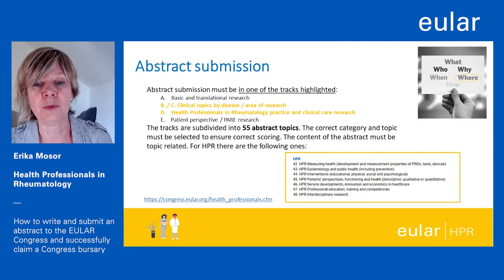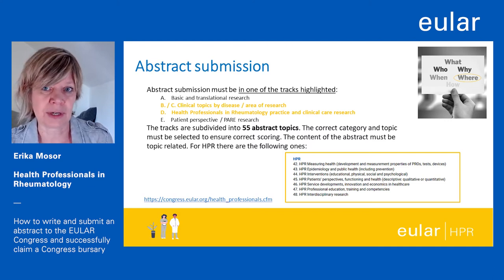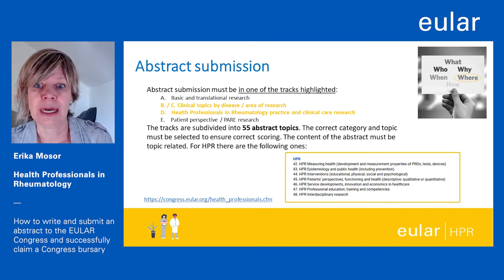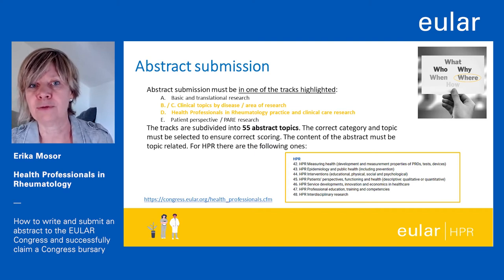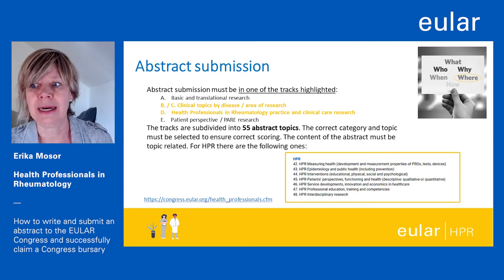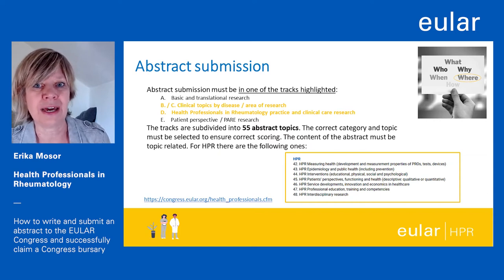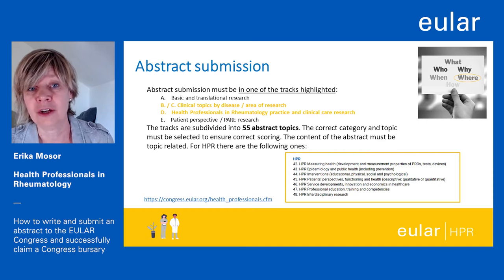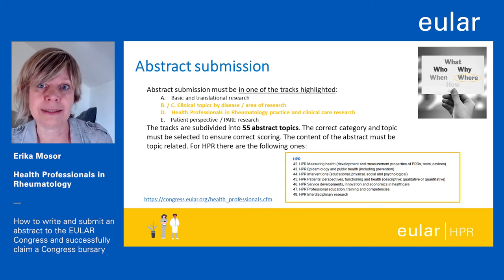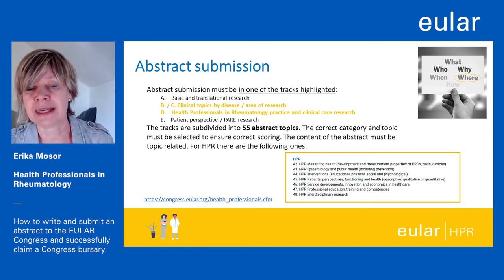On the EULA Congress homepage you will find all the information you need for an abstract submission. There are several tracks available and you can see them on this slide. Health professionals can choose to submit their abstracts either for practice and clinical care or clinical research work — that's tracks B, C and D, also highlighted in orange on the slide. The tracks are subdivided into 55 abstract topics, and it's important you choose the correct category and topic to ensure that your abstract is scored in the correct way. The content of the abstract must be topic related — this is of great importance. In the box on the right side of the slide you can see the topics within the HPR category.